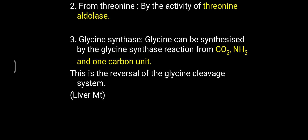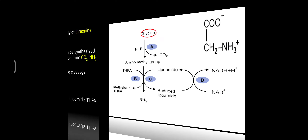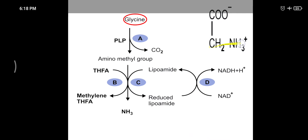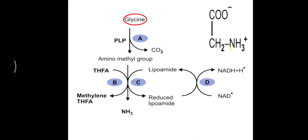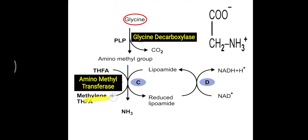The glycine breakdown (cleavage) system occurs mainly in liver mitochondria. It is a multi-enzyme complex requiring coenzymes: NAD⁺ (vitamin B3), lipoamide, tetrahydrofolic acid, and pyridoxal phosphate (PLP). In the breakdown, glycine first undergoes decarboxylation — carbon dioxide is removed by glycine decarboxylase, with PLP (vitamin B6) required. The remaining part is called the aminomethyl group, consisting of an amino group and a methyl group.